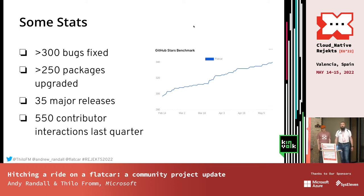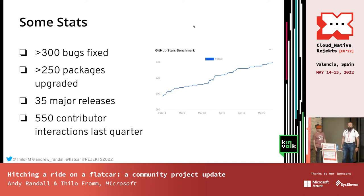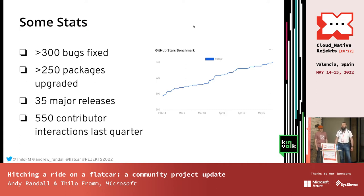Some raw numbers: since we detached from CoreOS and basically learned to walk by ourselves, we have more than 300 bugs reported and fixed from users. We have more than 250 packages upgraded, and all of Flatcar is basically 320 packages — so we went through a lot there. We had 35 major alpha releases since we detached in late 2019, and only in the last quarter we had 550 contributors interacting with the Flatcar GitHub project in some way, be it bugs or PRs being filed.